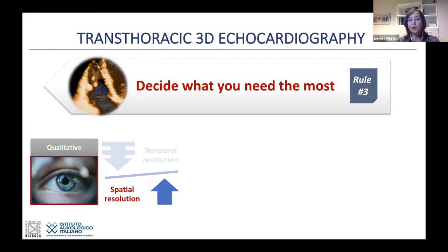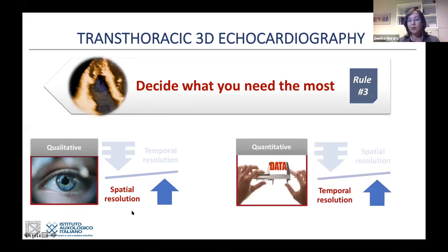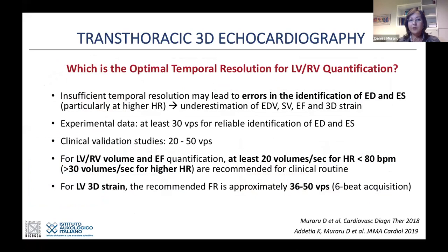Rule number three: decide what you want most. If you need to look at anatomy—papillary muscles, subvalvular apparatus, morphology of the right ventricle—favor spatial resolution. If you want quantitative data like volumes and ejection fraction, favor temporal resolution. For quantification of volumes, there is a question of optimal temporal resolution. With single-beat acquisition and insufficient temporal resolution, you may get errors in identifying end diastole and end systole, leading to smaller volumes and lower ejection fraction. Experts suggest at least 20 volumes per second for normal heart rate, at least 30 for tachycardia, and more than 36–50 volumes per second for 3D strain—requiring a six-beat acquisition.